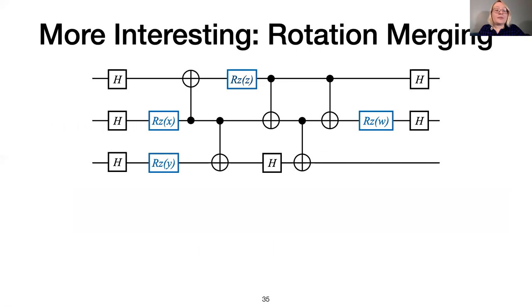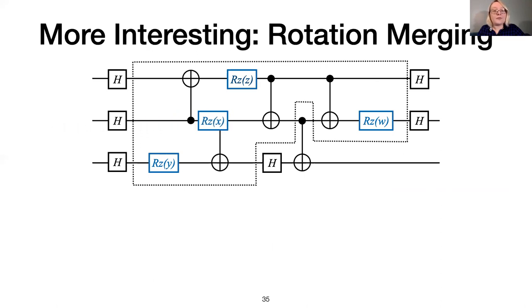Here's an example of an optimization that uses our library function for replacing a subprogram with an equivalent program. In this optimization, called rotation merging, we first identify subcircuits consisting of only RZ and CNOT gates. Then for each subcircuit, we look for RZ gates that act on the same logical state. In this case, the first and last RZ gates act on the same logical state. So we can combine them into a new RZ gate, whose parameter is the sum of the original parameters. To see why this is the case, let's return the gates to their original position.